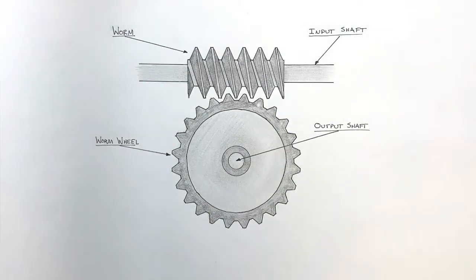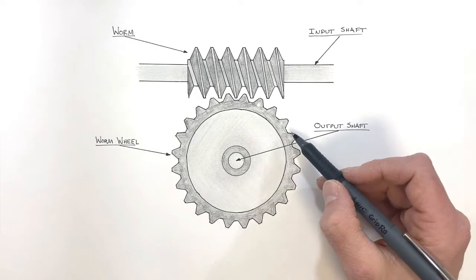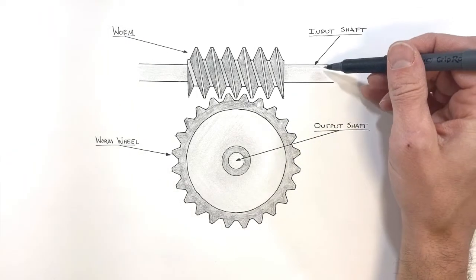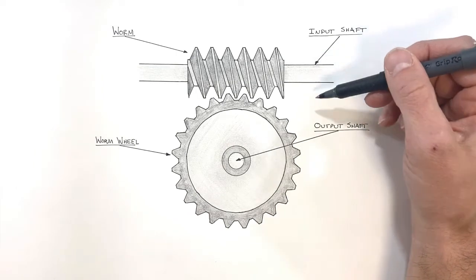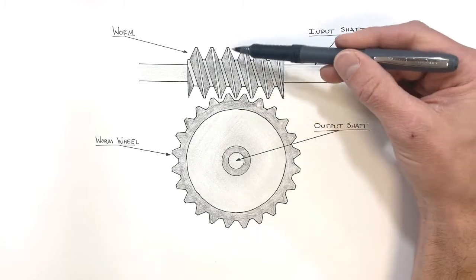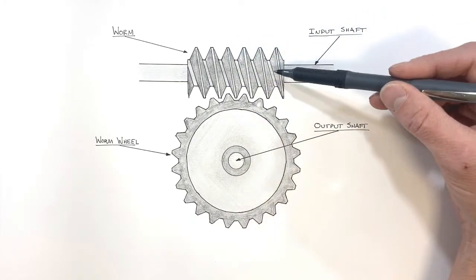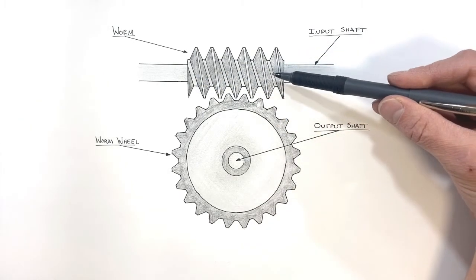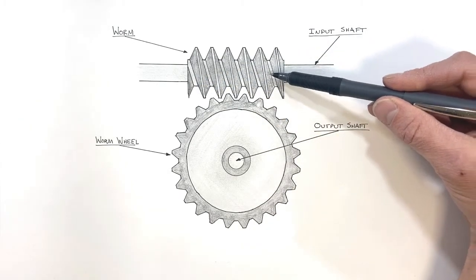The advantage of a worm gear assembly is that it can provide an absolutely enormous mechanical advantage. If this input shaft was to rotate around once, that means this worm gear is going to rotate around once as well. If this worm gear, which is really just a screw connected to a shaft, rotates around once...